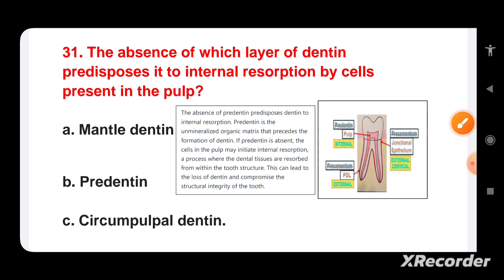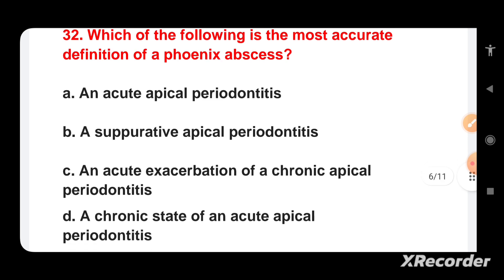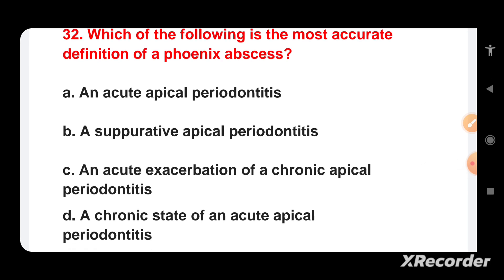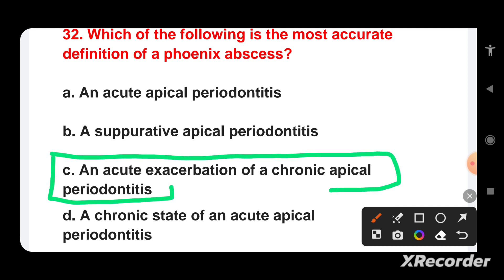Which of the following is the most accurate definition of the phoenix abscess? Options are: an acute apical periodontitis, a suppurative apical periodontitis, an acute exacerbation of chronic apical periodontitis, or a chronic state of acute apical periodontitis. The phoenix abscess is an acute exacerbation of chronic apical periodontitis.